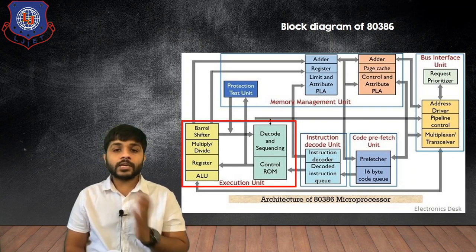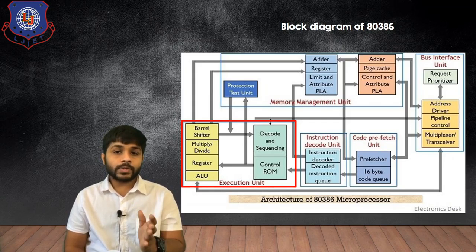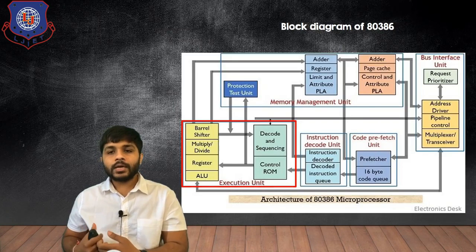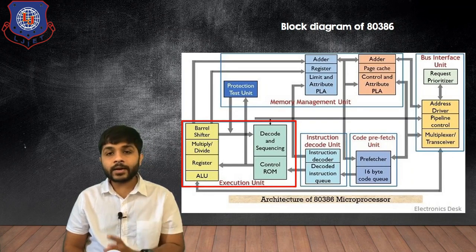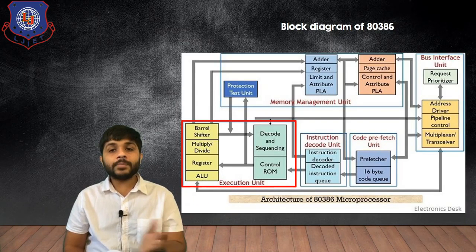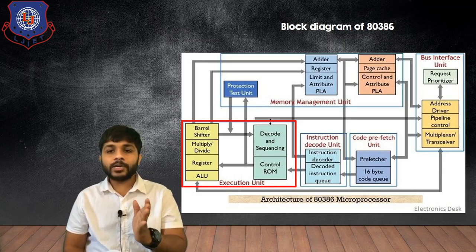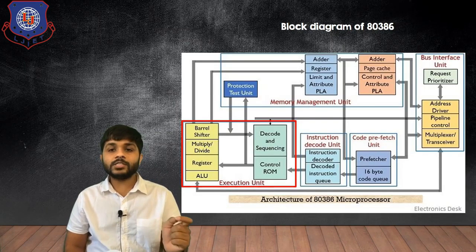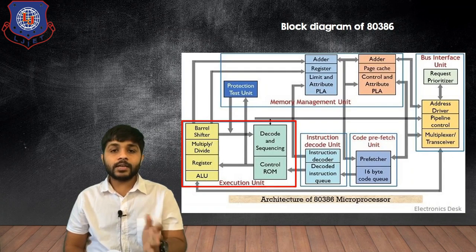After that the decoded instruction will be transferred to the execution unit. In the execution unit there are different sections such as ALU, registers, multiplier/divider, barrel shifter, decode and sequencing, and control ROM. The 80386 has some temporary registers and general purpose registers to process data. There is a multiply and divide unit. The barrel shifter allows you to shift multiple bits in one cycle — unlike the 8085 where rotating the accumulator left only shifts by one bit, the barrel shifter can shift more than one bit in a single cycle.